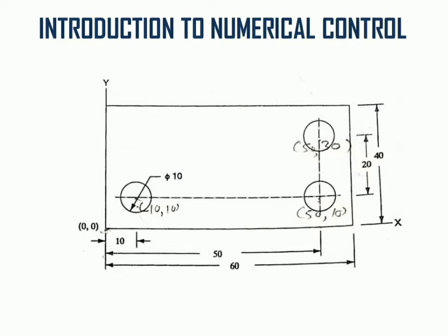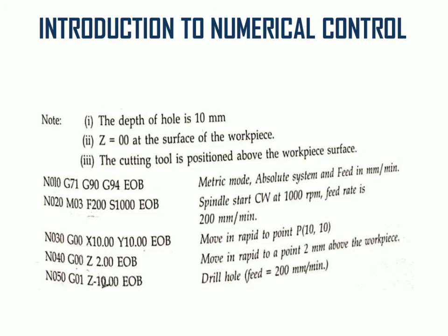After the calculation of the coordinates of all three points, we start to develop the program. The depth of the hole is 10 mm, and the Z coordinate is considered as 0 for the surface of the workpiece. The cutting tool is positioned above the workpiece surface — that distance is not given, so we will consider 2 mm tool distance above the workpiece surface.